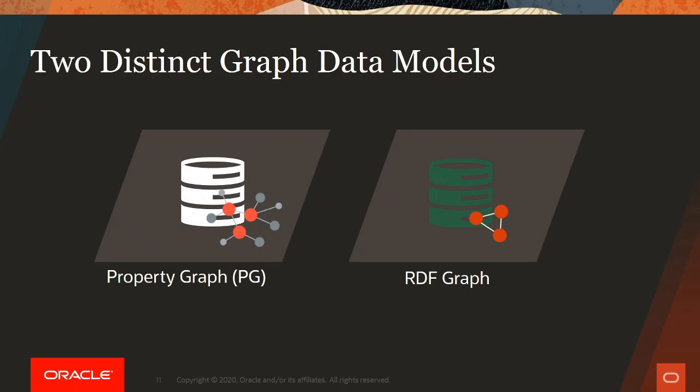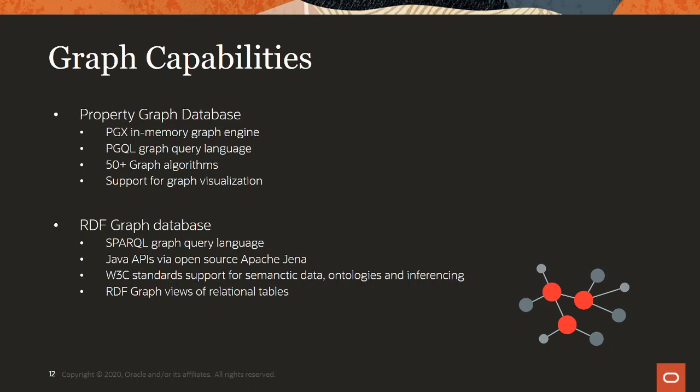Shifting to graph, we support two different approaches: the property graph and the RDF graph. For the property graph, we have the PGX in-memory graph engine and the PGQL graph query language, along with over 50 graph algorithms to experiment with. For the RDF graph, we have the SPARQL query language and follow W3C standards for semantic data and ontologies, supporting linked data and the semantic web where all information is connected.